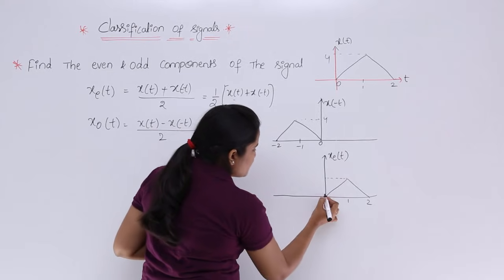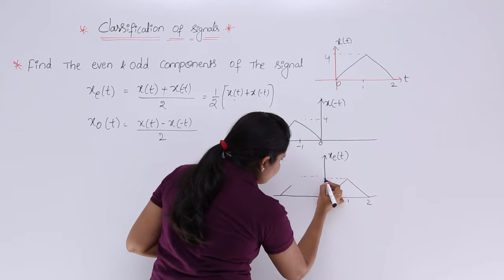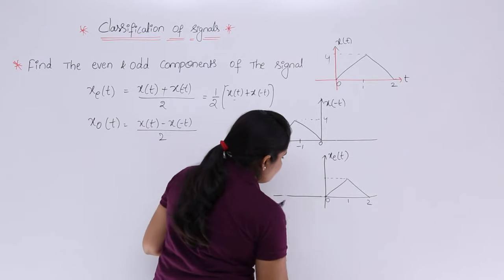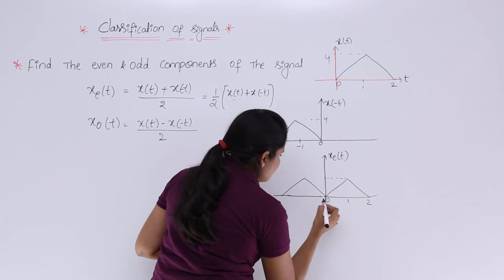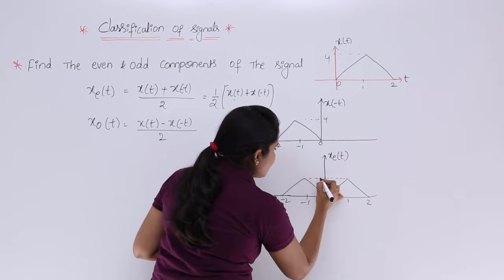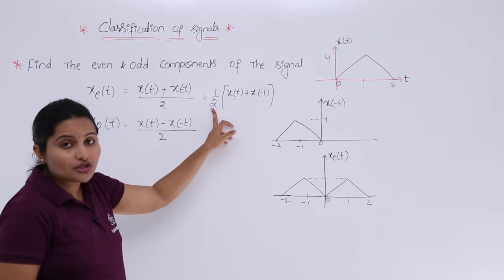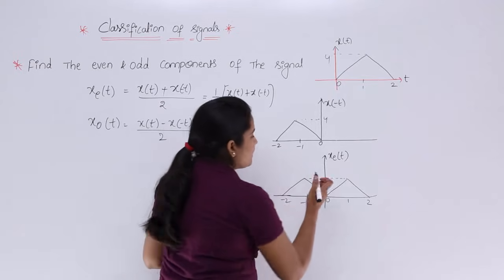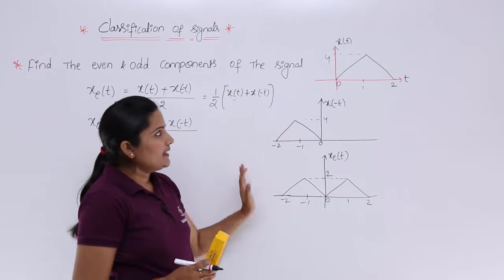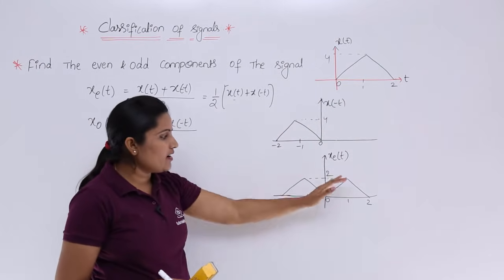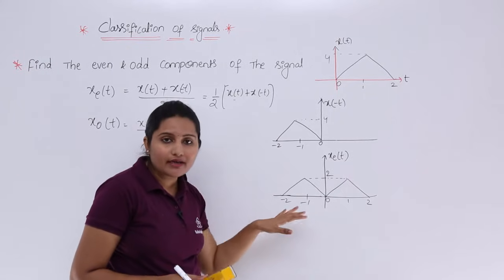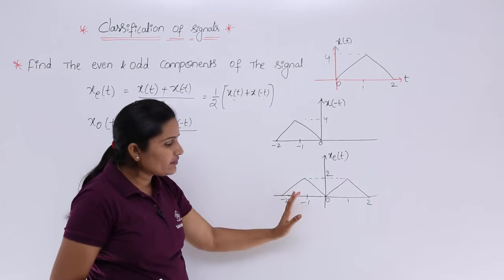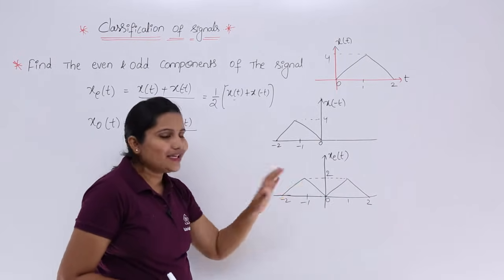We also need to add 0 to minus 2 from x(-t). You can see from the origin it starts. This is x(-t) with the same amplitude. Now we need to half the actual amplitude — the actual amplitude is 4, so halving it gives 2. The even component xe(t) covers from minus 2 to 2, whereas x(t) covers only 0 to 2 and x(-t) covers only minus 2 to 0. This is the even component diagram.